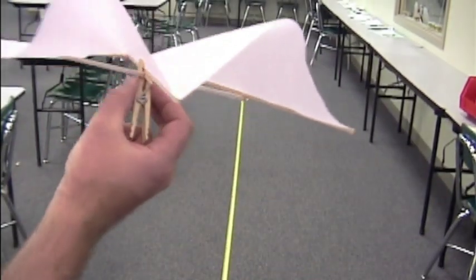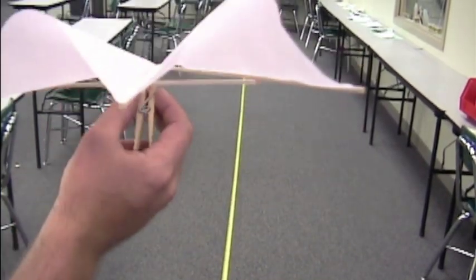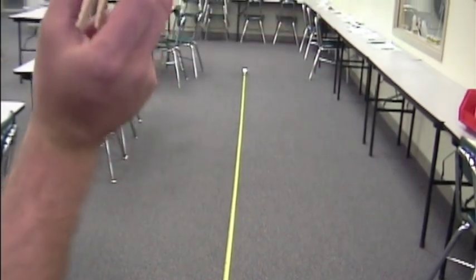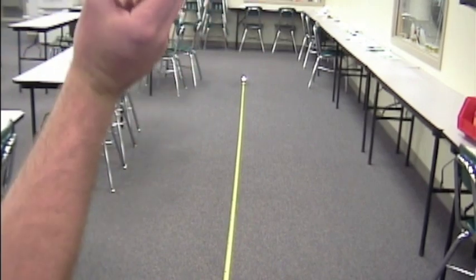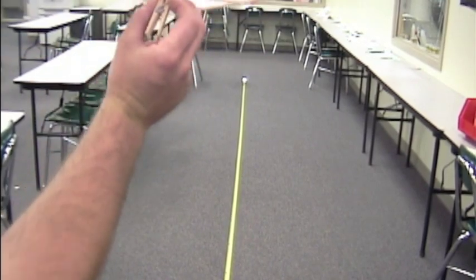When you throw your hang glider, it's important to remember that this is not a baseball. You need to throw it gently. It's a glider. So you are not throwing it in a hard motion. You're just nice easy release to let it glide through the air.